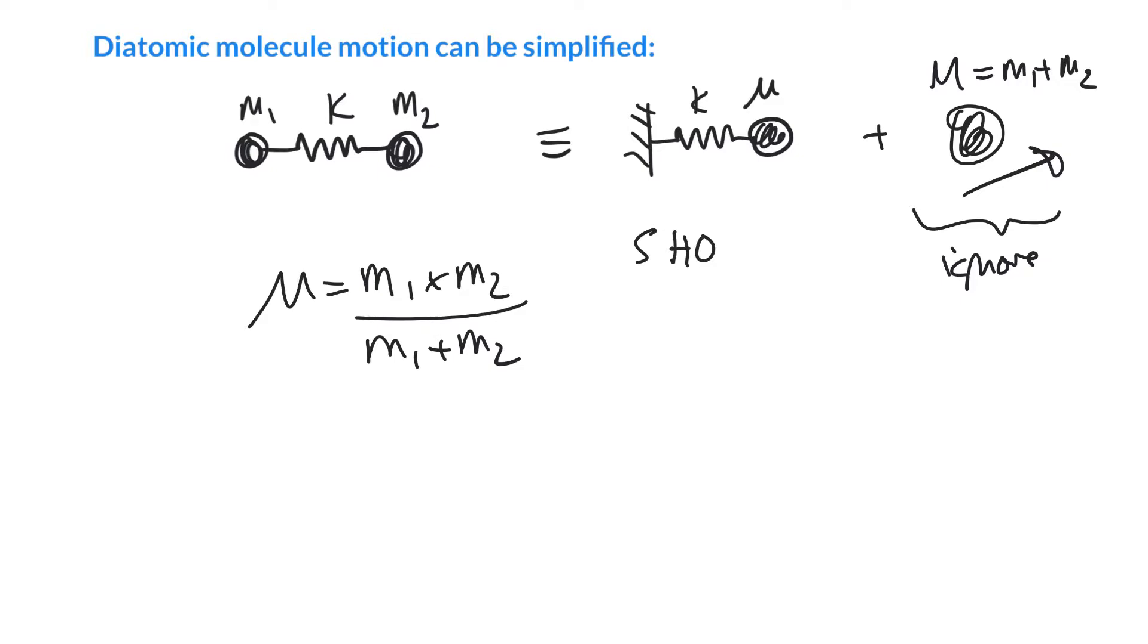For diatomics, this always leads to a smaller mass than either m1 or m2. That's why we refer to it as the reduced mass.